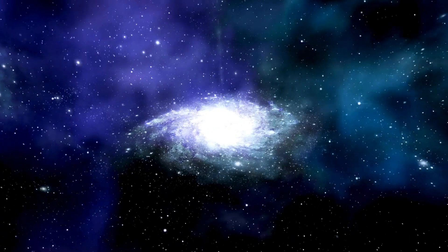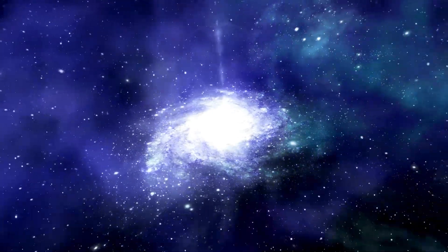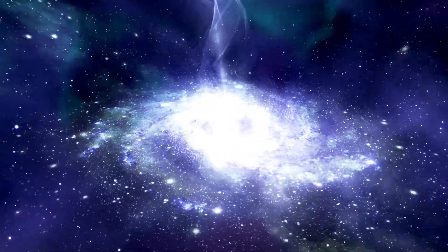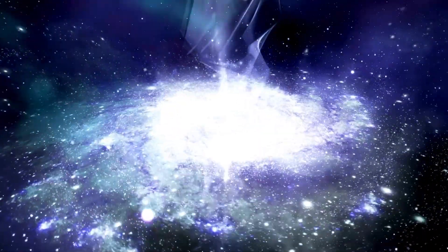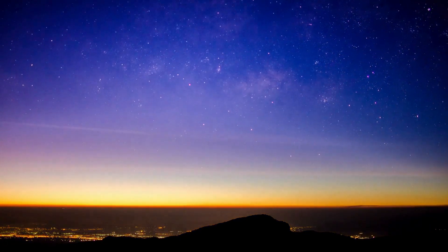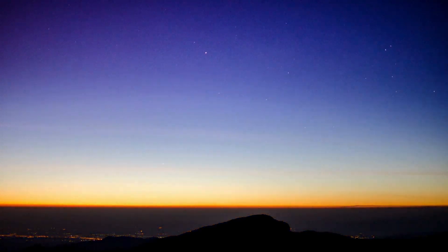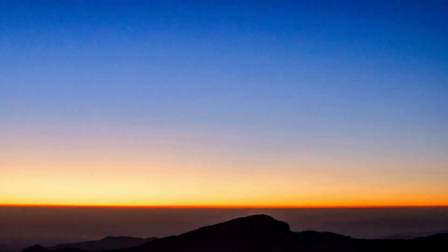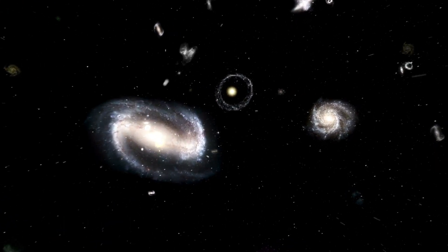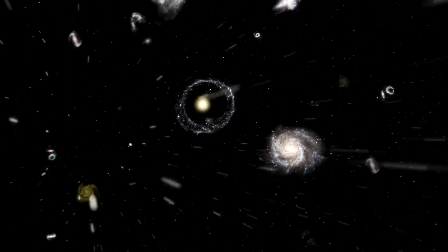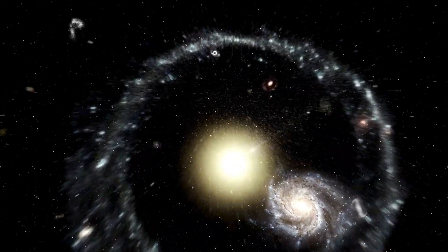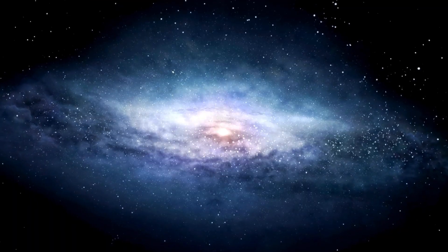One of the main arguments for the Big Bang theory was the observation that distant galaxies are moving away from us, with more distant galaxies receding faster. This phenomenon, known as redshift, suggests that the universe is expanding. If we trace this expansion backward, it implies that all matter in the universe was once compressed into a singular point. This observation, first made by Edwin Hubble in the 1920s, has been a cornerstone in supporting the theory.